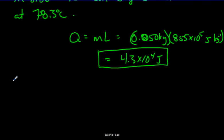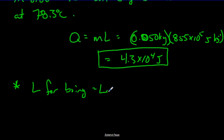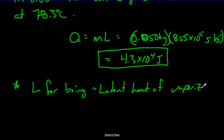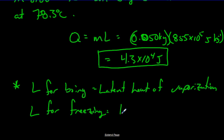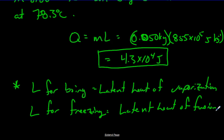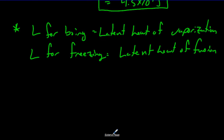So that's how you use specific latent heat of either vaporization or fusion. L for boiling is called the latent heat of vaporization, and L for freezing is called the latent heat of fusion — fusion as in fusing together from liquid into solid.